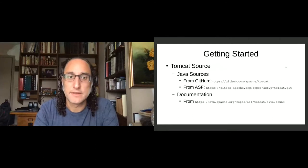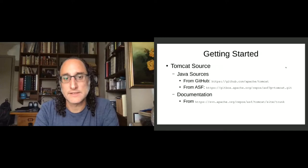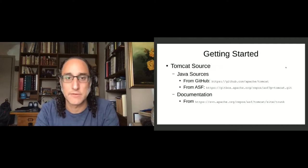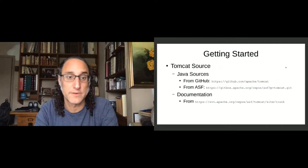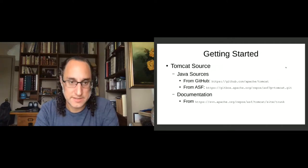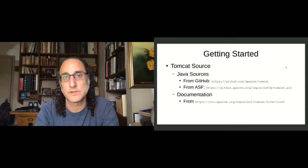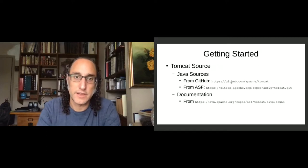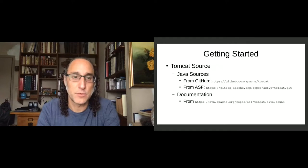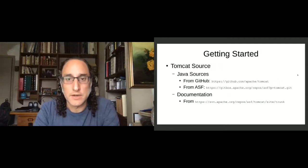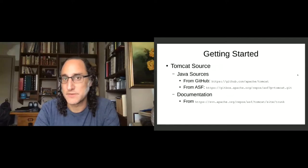The Tomcat source is pretty easy to get. You can either pull it from GitHub by Git cloning the URL shown, or use the ASF's Gitbox repository, which is a mirrored copy of GitHub — everything goes back and forth. The documentation comes from Subversion. To fetch the Java sources you would run git clone with the GitHub URL, and to get the documentation you would do svn checkout with that URL. You might want to rename those directories to something like 'tomcat9-source' to be more specific.